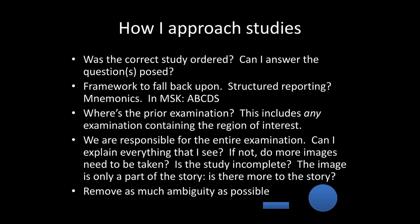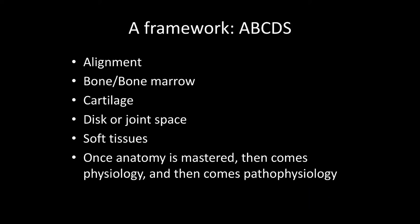The framework I use is the mnemonic ABCDS: Alignment, Bone or bone marrow, Cartilage, Disc or joint space, Soft tissues. Once the anatomy is mastered for all of these areas, then comes the physiology and then the pathophysiology. There's a lot of anatomy to know and a lot of physiology to know, and a lot can go wrong. But you have to start somewhere — with anatomy in terms of alignment, bones, what does a normal bone look like, where does the cartilage go, where is it normally, and then disc or joint space and soft tissues.